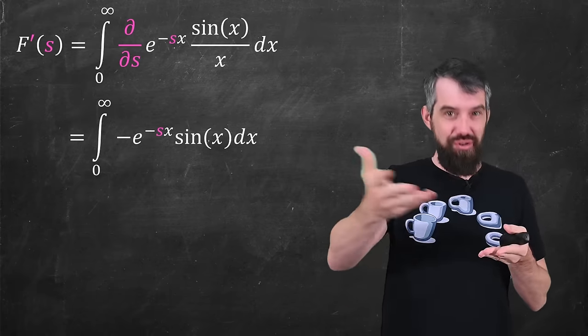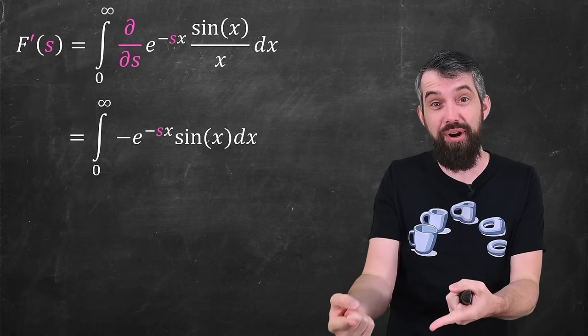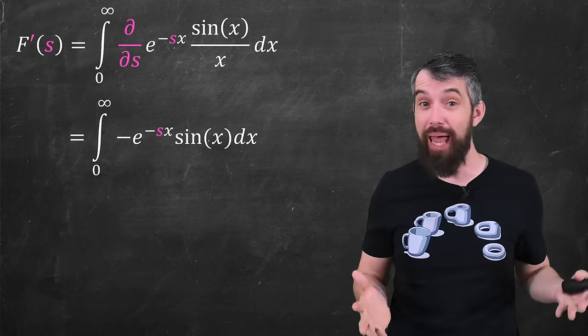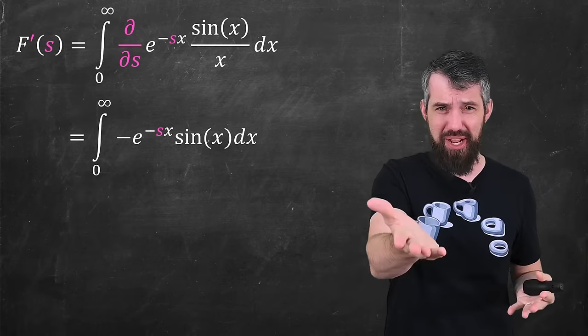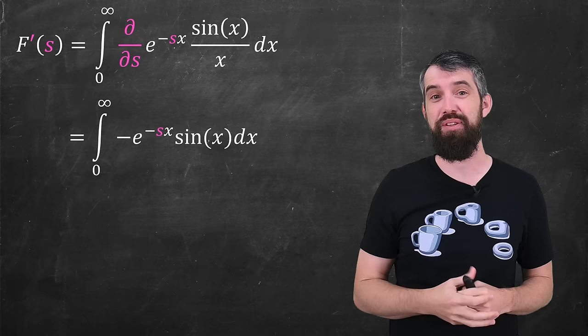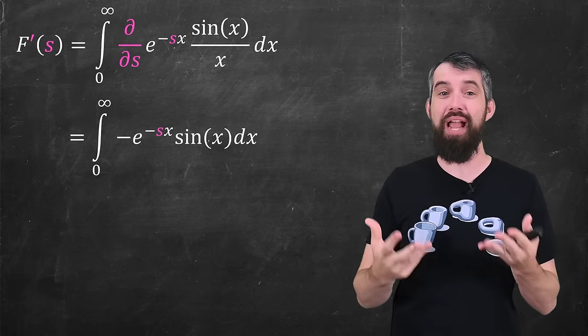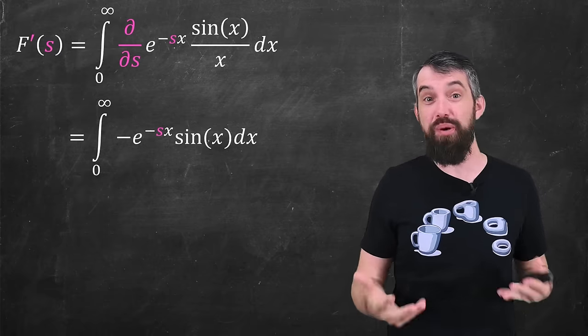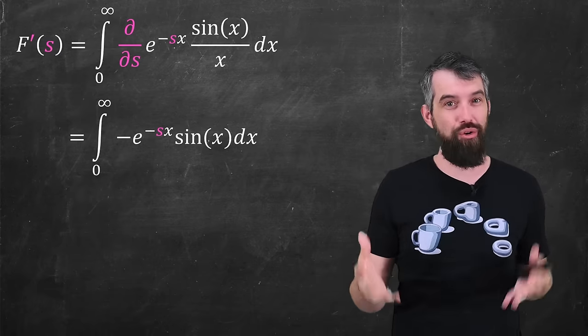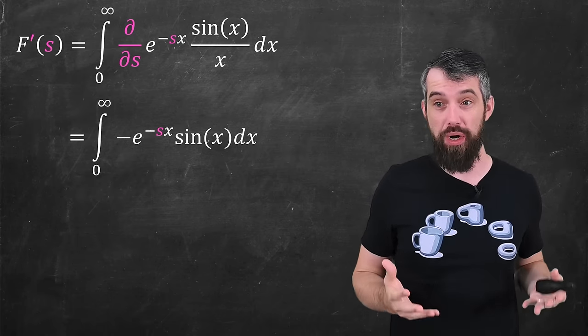And now I get just an exponential times a sine term. This trick where you introduce this parameter, and you take the derivative with respect to that parameter, is referred to as Feynman's trick. And it can be helpful for a whole class of integrals. You also might recognize if you're somebody who knows Laplace transforms, and I have a playlist on that, I'll put a link down in the description. This is nothing but the Laplace transform of sine x divided by x. So with some experience, this e to the minus s x business doesn't seem quite so crazy and left field as it might right at the very beginning.